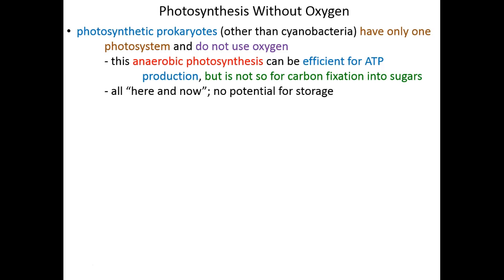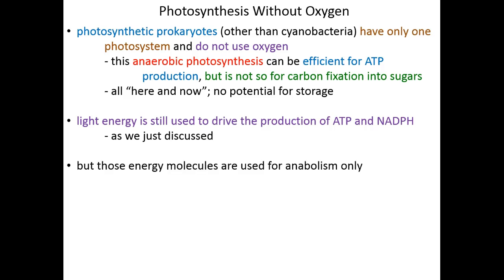So all of the energy created by this mechanism is here and now immediate energy. There's no way to store excess ATP the way that plants can store glucose, and so these photosynthetic bacteria can't really make energy for hard times. They can only make energy in the here and now. Still, though, light energy is what's being used to drive the production of NADPH and ATP. All that we've just discussed for photosystem 1 and 2 still applies. It's just that we can't make glucose. And also, those energy molecules are only used anaerobically because we can't have oxygen around in this process, or oxygen isn't used, and it's only used for anabolism as well because there's really nothing to digest. There's no sugar being created.